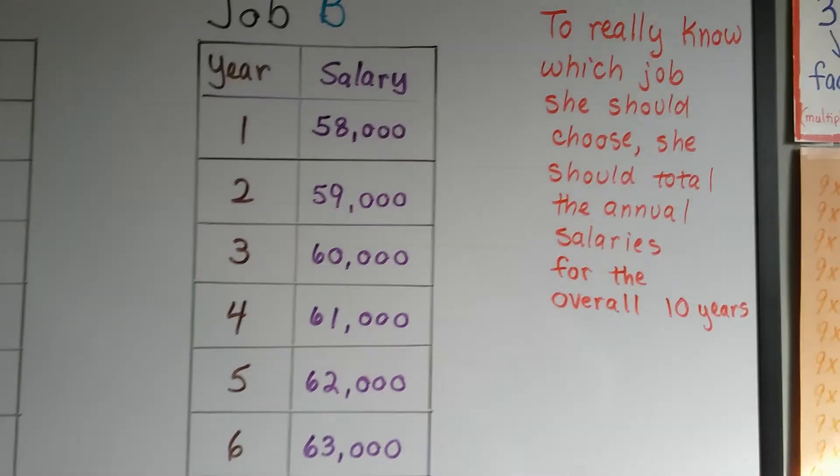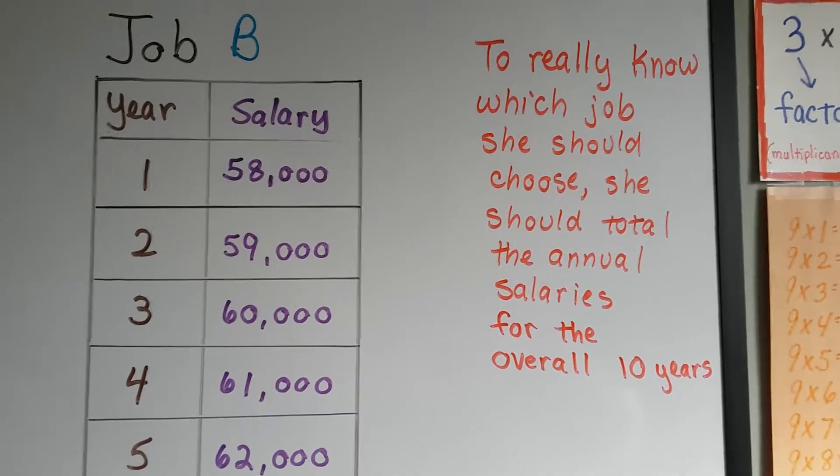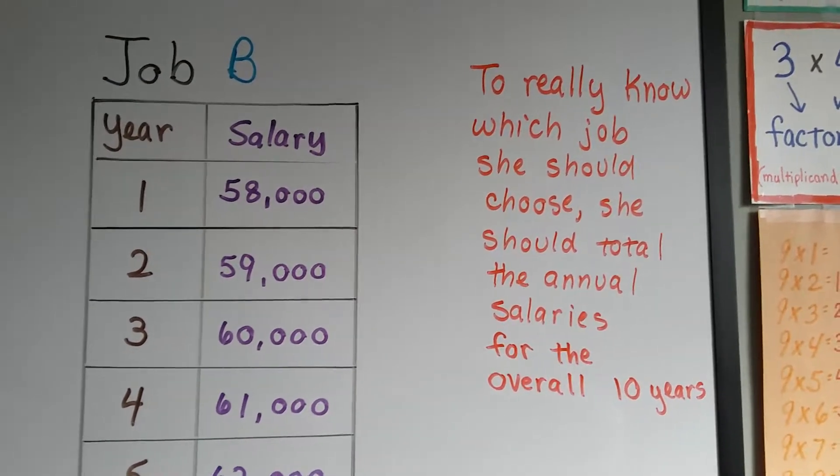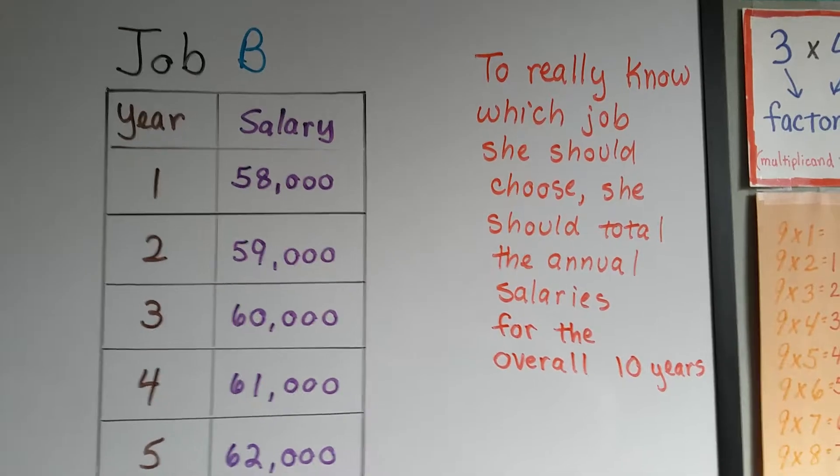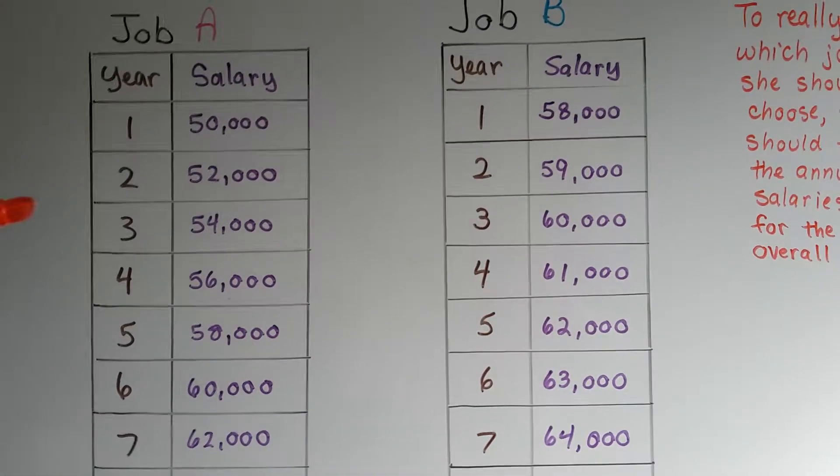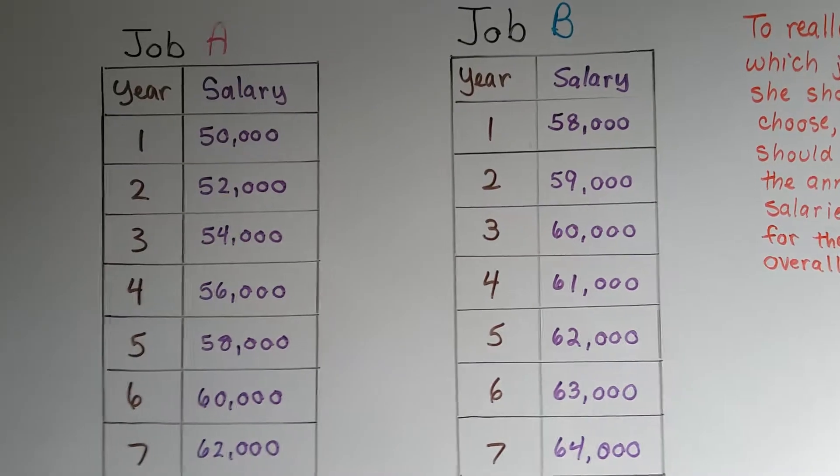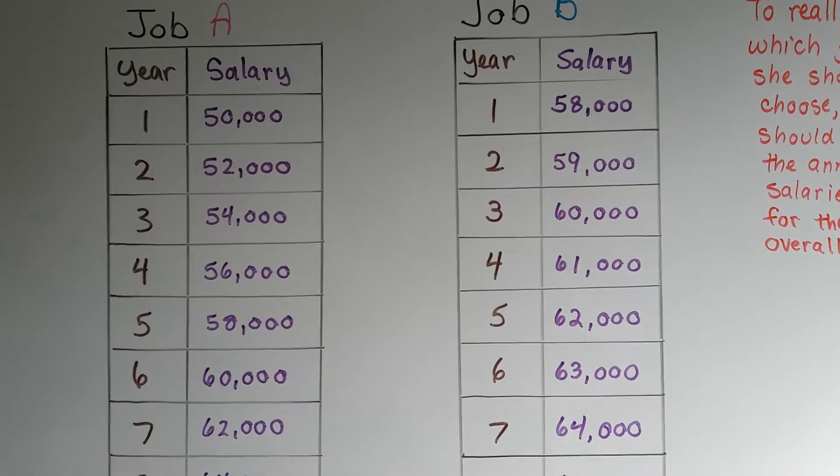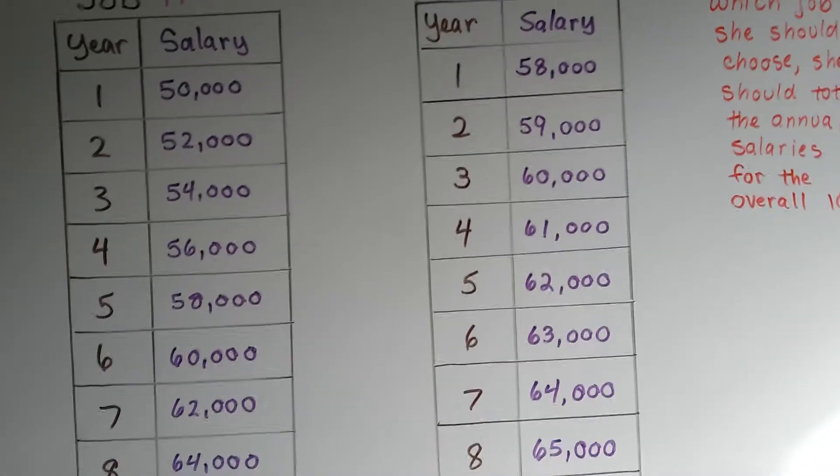To really know which job she should choose, she should total the annual salaries for the overall 10 years. Unless she wasn't planning on being there for 10 years. If she was only planning on being there for 3 years, then it would be smarter to take job B, wouldn't it? Because she'd be at $60,000. But if she was planning on being there the whole 10 years, guess what?